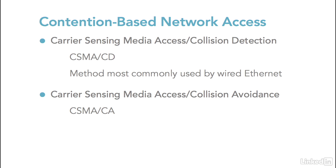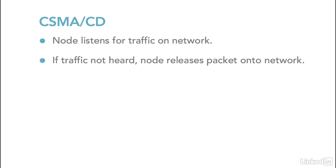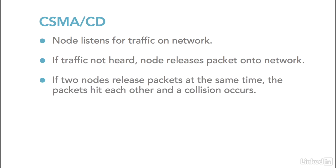Let's look at the CSMA/CD contention method first. Basically, each node or computer on the network listens for traffic going by on the network. If it doesn't hear any traffic, the node will release a packet onto the network. However, if two nodes are listening at the same time and neither hears any traffic, they will both release their packet at the same time. When this happens, the packets end up hitting each other and we have what is called a collision.